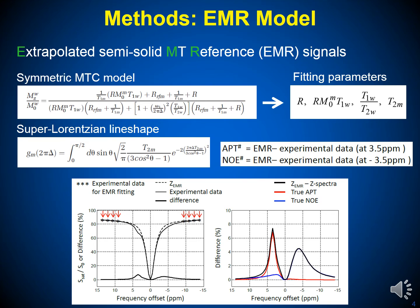Therefore, APT and most NOE contributions are minimized in our MT model, and the obtained MT curves in the frequency offset range of ±6 ppm include only water saturation and semi-solid MT effects. Finally, by subtracting the experimental data from the EMR curve, we can obtain the APT# and NOE# signals.